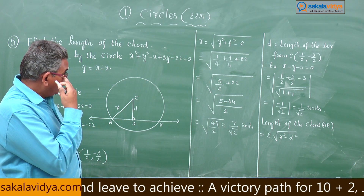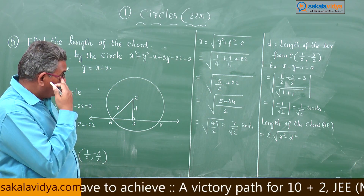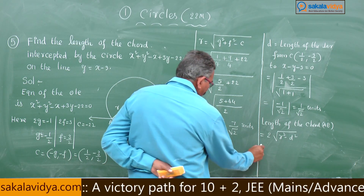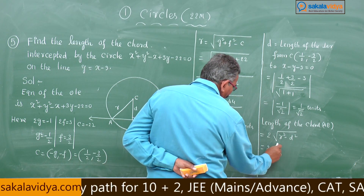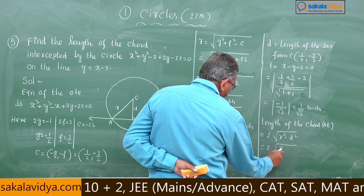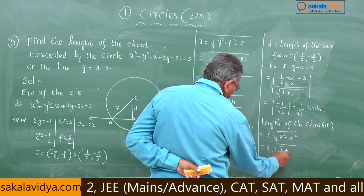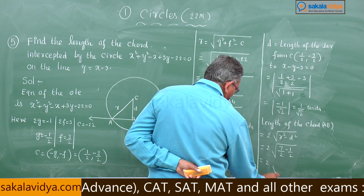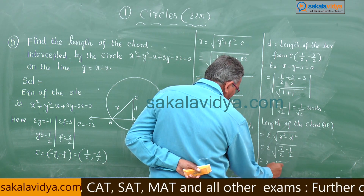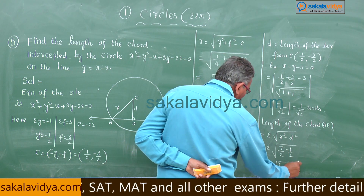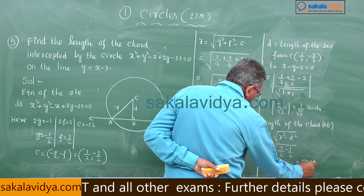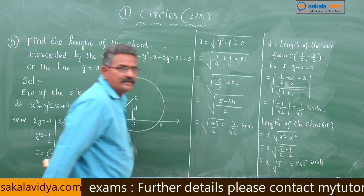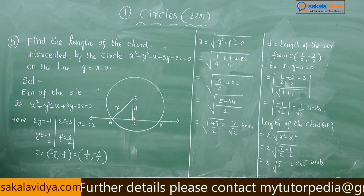With r = 7/√2 and d = 1/√2, the chord length AB = 2√(r² - d²) = 2√(7/2 - 1/2) = 2√(6/2) = 2√3 units. That is the answer — you check it.